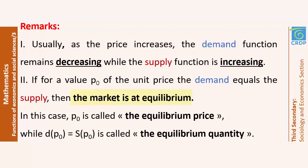Another remark: if for a value P0 of the unit price the demand is equal to the supply, we say that the market is at equilibrium. If all the quantity that is produced or distributed to the market is bought by people, the market is at equilibrium. In this case, the price will be called the equilibrium price, and the quantity bought, which equals the supply, will be the equilibrium quantity.